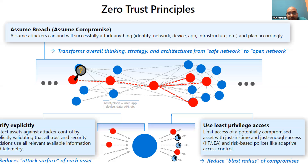The least privileged principle, or least privileged access, means we will provide only the access that is needed — not more than that. We will limit user access with just-in-time or just-enough access or administration. We will apply risk-based adaptive policies and data protections. It's not only least privileged — it's least privileged with time expiration.